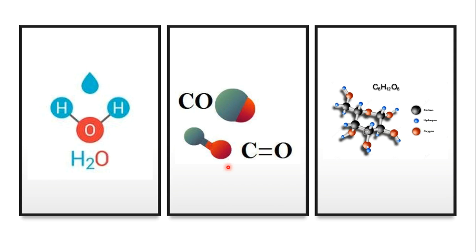Looking at glucose: it has six carbon atoms, twelve hydrogen atoms, and six oxygen atoms, as seen below. What you can gather from this is that water, carbon monoxide, and glucose are all made up of hydrogen, oxygen, and carbon — but they all have different properties. That is because adding different amounts of the same elements can make up a totally different substance.